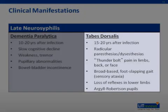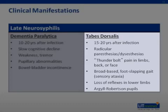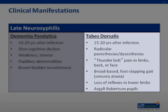Tabes dorsalis occurs 15 to 20 years from the time of the initial infection. It is characterized by radicular paresthesias or dysesthesias, lancinating pain that is sudden, brief, and can affect the limbs, back, or face, loss of proprioception and vibratory sensation resulting in a sensory ataxia and a broad-based foot-slapping gait, absent reflexes in the lower limbs, and pupillary irregularities. The typical pupillary finding is called an Argyll-Robertson pupil, consisting of a small pupil with loss of pupillary reaction to light, which is preserved to accommodation.